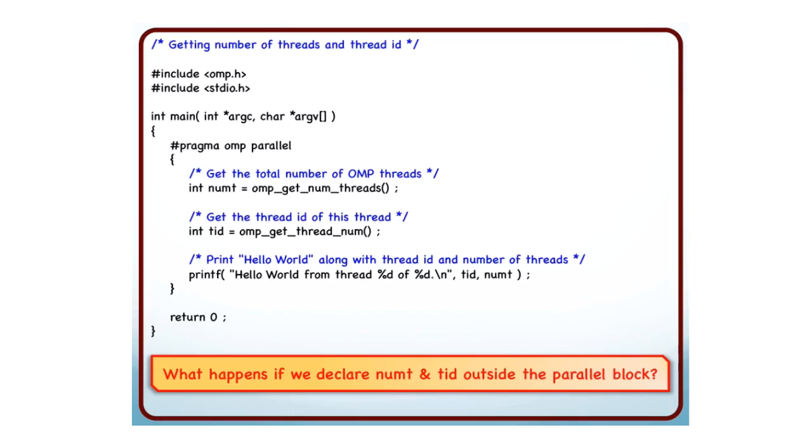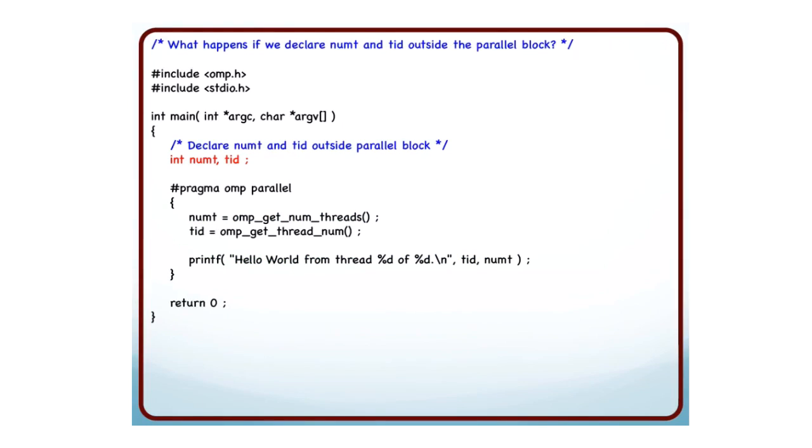Now, let's consider the following scenario. I had declared and defined numt and tid inside the parallel region, and therefore a separate copy was created for each of these. What happens if we declare these variables outside the parallel block? This is the change I have made - remember I asked you to concentrate on the red part. I have now declared numt and tid outside the parallel region. So what happens now?